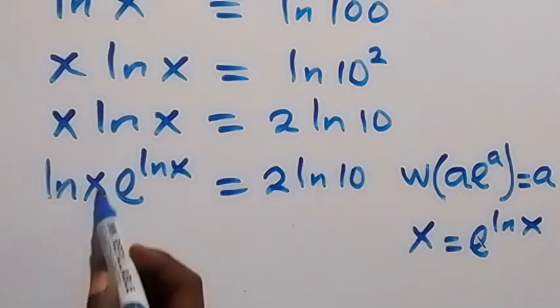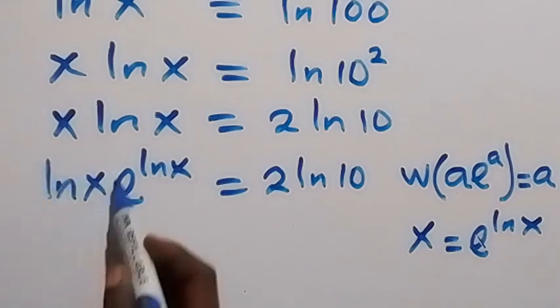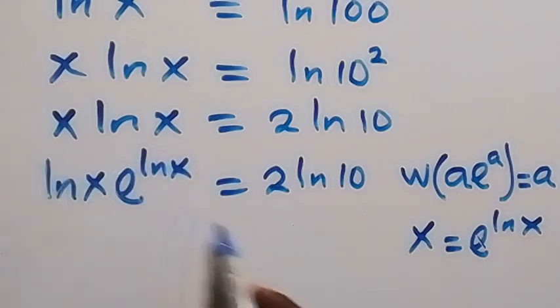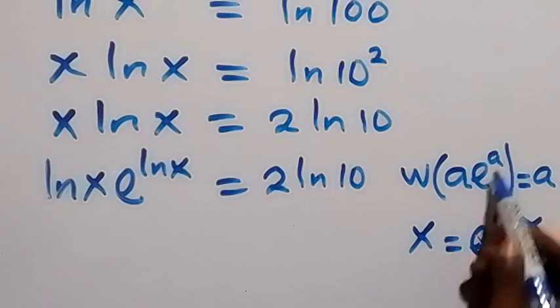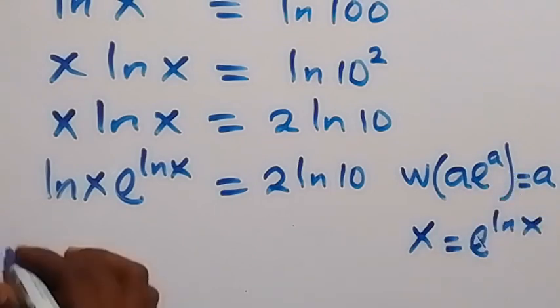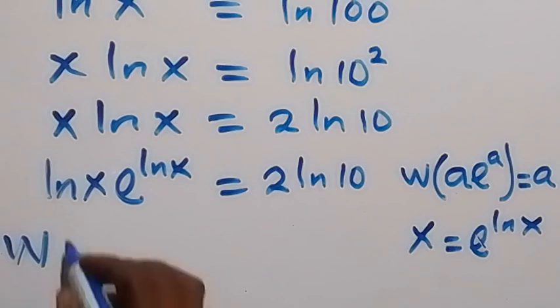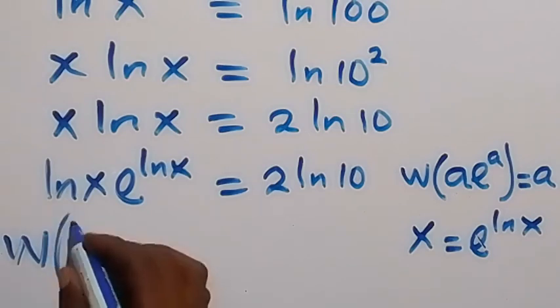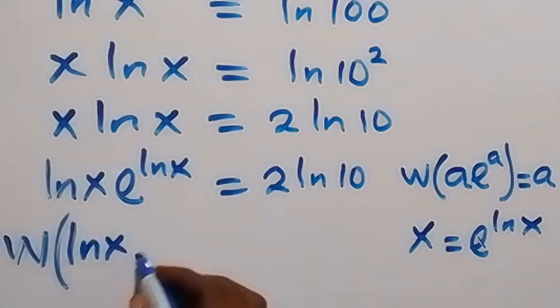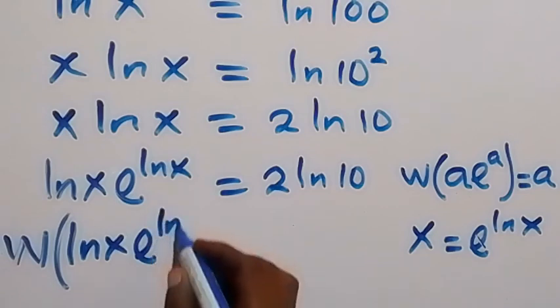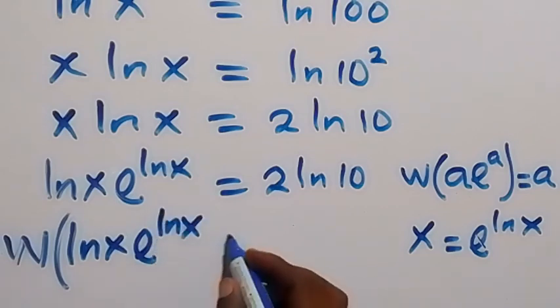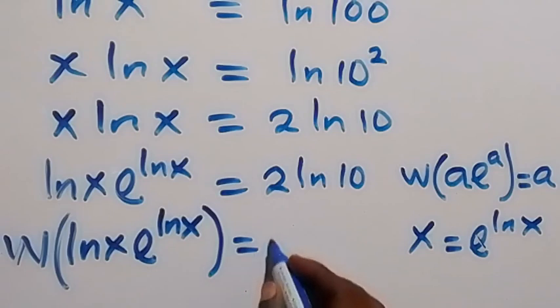From here, in the next step, since I've already have the coefficient same thing as the power here, which is in form of a and the a here, then we can introduce W function on both sides, that's W Lambert function. Then ln x exponent to power ln x, then equals to also W...